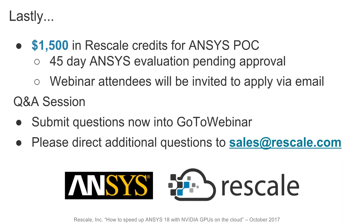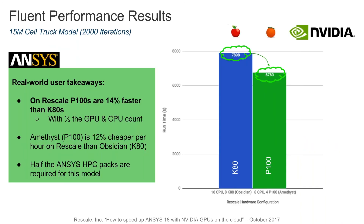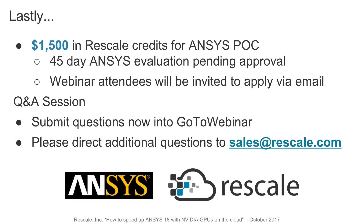Next question: what is the price difference between P100 and others — 2x cost or higher? The easiest way to see our latest pricing is to sign up and go to the hardware page of Rescale. For the configurations we ran that were close in performance — where the P100 core type was 14% faster — the per-hour cost was roughly $10 for the P100 and just over $11 per core hour for the equivalent Obsidian package. So that's roughly a 12% improvement in cost efficiency for a 14% increase in speed.